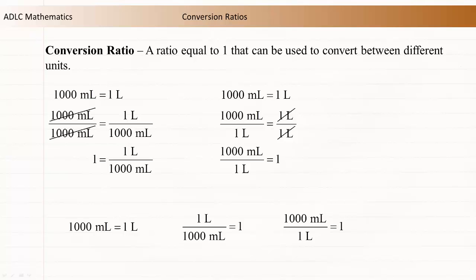Although the original equality isn't represented as a ratio equal to 1, it contains the same information as the other equations, so we are going to refer to it as a conversion ratio in this course. Each of the three conversion ratios can be used to convert between milliliters and litres.